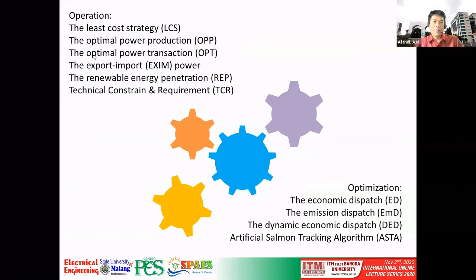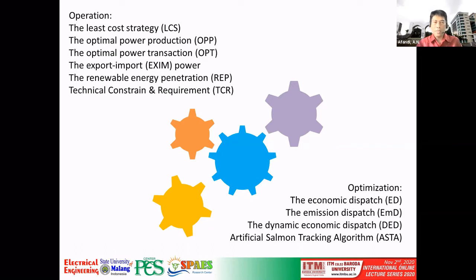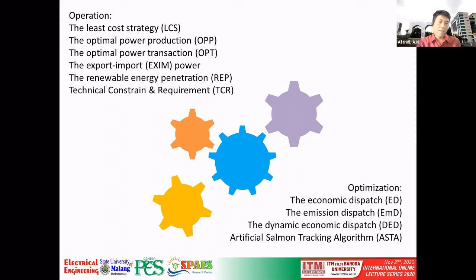We also look at how to get the optimal power production based on many combinations of power sources or power plants. We also think about the optimal power transaction based on power production — the power will be sent directly to the customer. This means how it can be sold through the transmission system or distribution system, so we get a certain charge for the transaction.